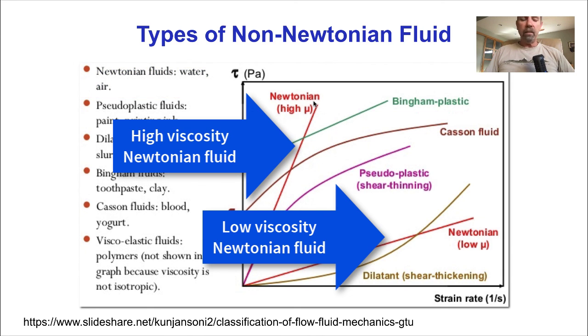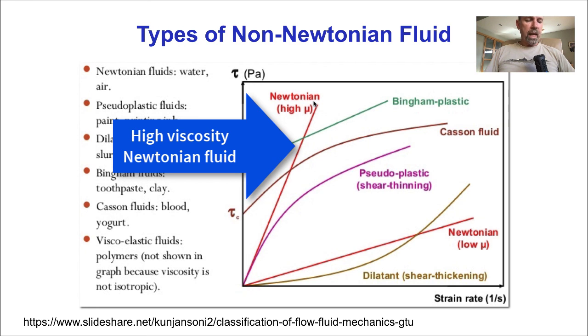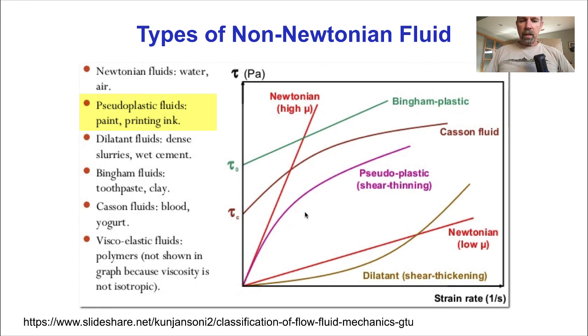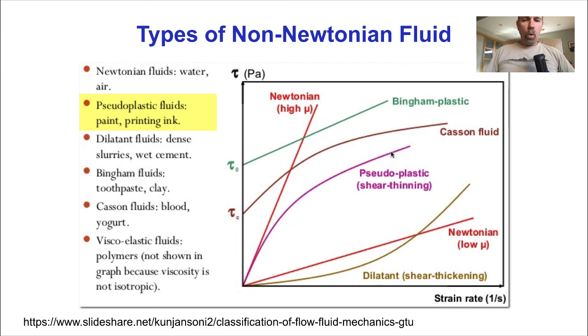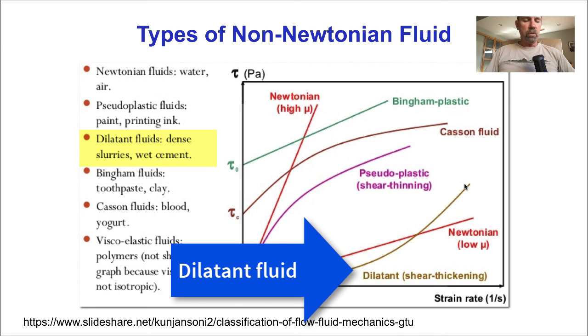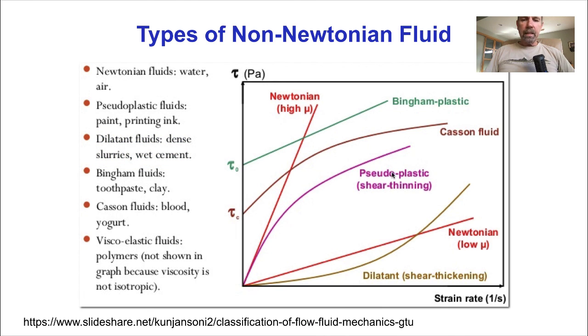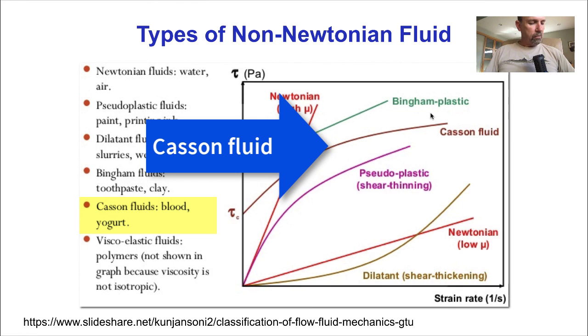Non-Newtonian fluid can be shear thinning, like a pseudoplastic fluid such as paint, in which the slope decreases with increasing shear rate, or shear thickening, so-called dilatant fluids, in which the viscosity increases with shear rate. Cornstarch and water suspensions or wet cement are a good example of dilatant, shear thickening fluids.